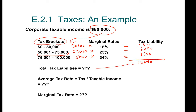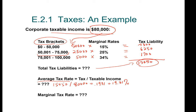Next, we're going to compute our average tax rate. The average tax rate is defined as the tax divided by the taxable income. Our tax we just computed is $15,450, divided by our taxable income of $80,000, which gives us an average tax rate of 0.1931, or 19.31%.